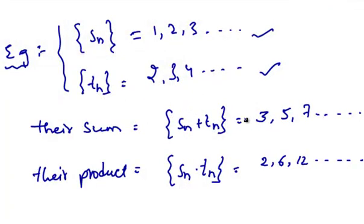Then the sum of these two sequences is Sn plus Tn equals sequence Sn plus sequence Tn, that is 1 plus 2, 2 plus 3, 3 plus 4, that is 1 plus 2 is 3 and 2 plus 3 is 5 and 3 plus 4 is 7. So sum of sequence Sn and sequence Tn is 3, 5, 7.